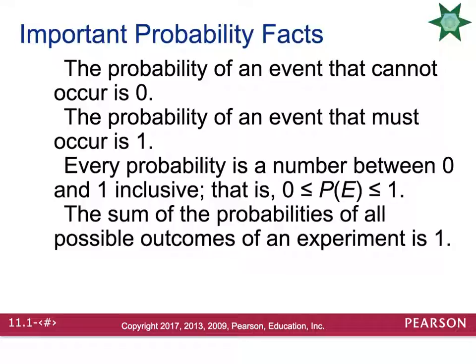So a couple important rules that you need to know. The first is the probability of an event that can never occur is going to be zero. So like rolling a seven on a die cannot happen. Zero.